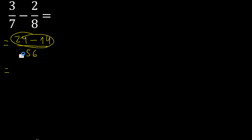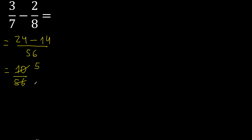Here, subtract — the result is 10. It can be simplified because it can be divided by the same number: divided by 2. 10 divided by 2 is 5, and 56 divided by 2 is 28. Finish.